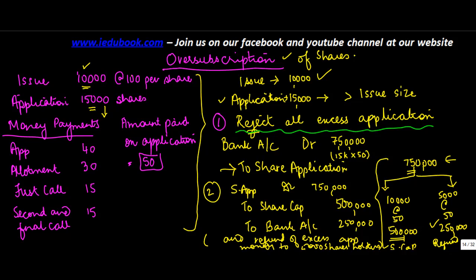Take some time to understand this — there is no rocket science. Whatever money you get, you credit to the Share Application Account. Once you do that, you bifurcate: what is the amount the company is supposed to receive goes to Share Capital Account, and the excess amount that has to be paid back — since I am paying it out, I credit the Bank Account because there is a movement of funds out of the bank and my asset is getting reduced.